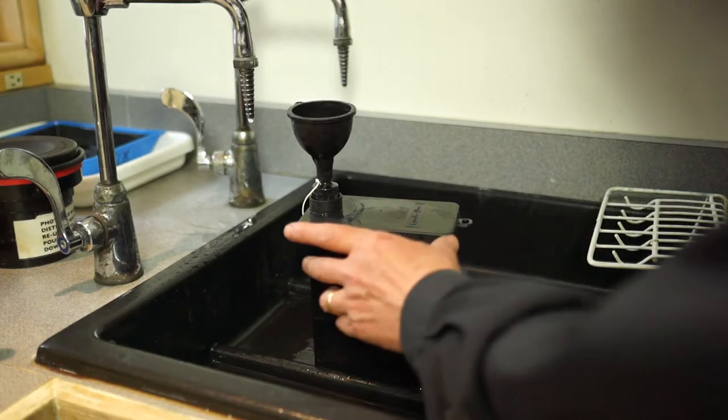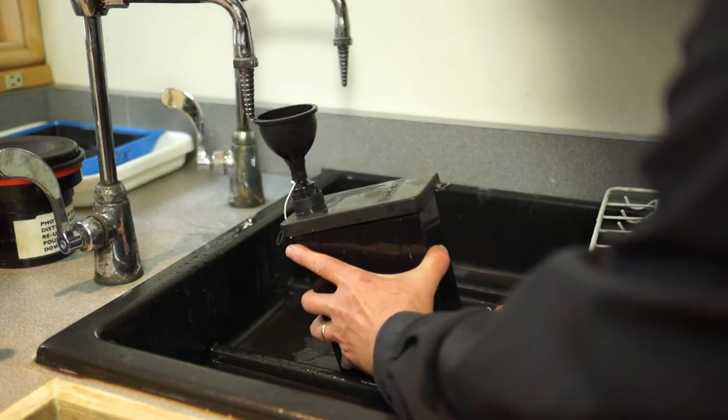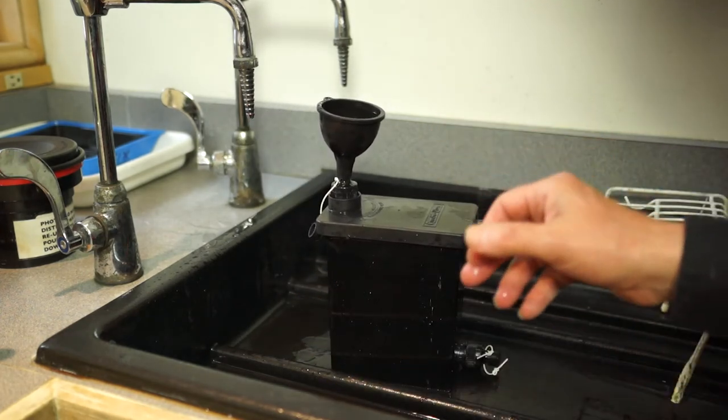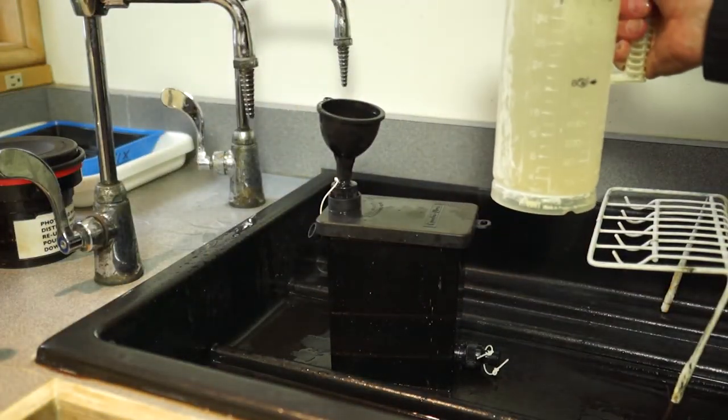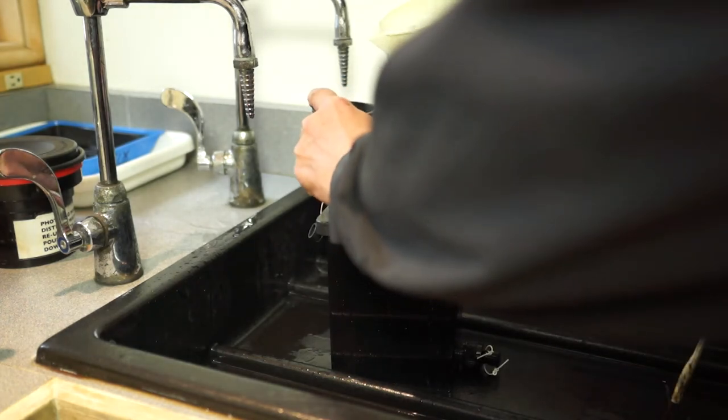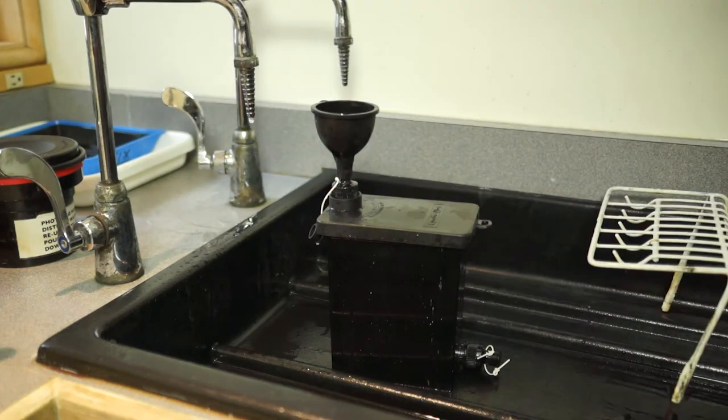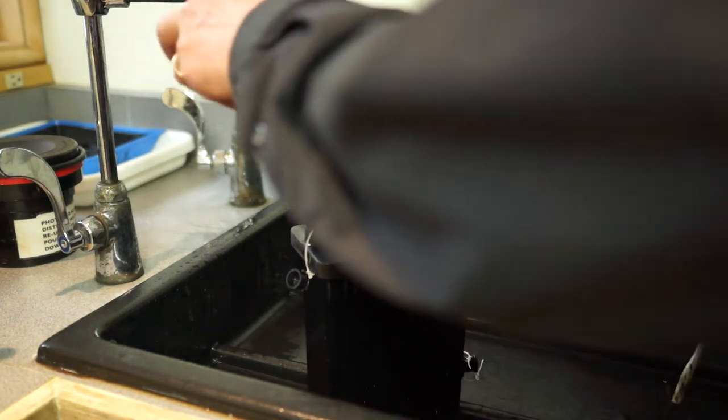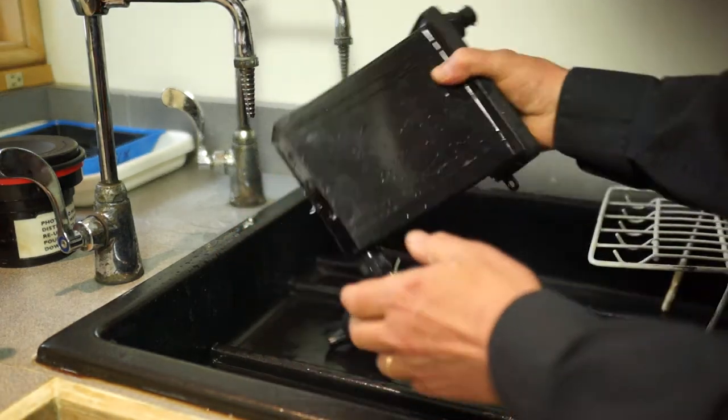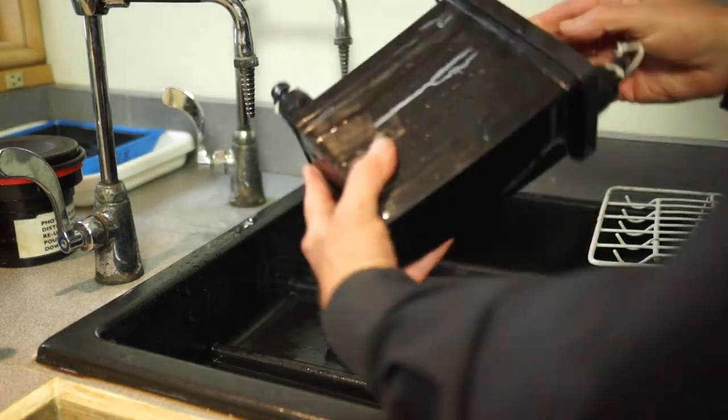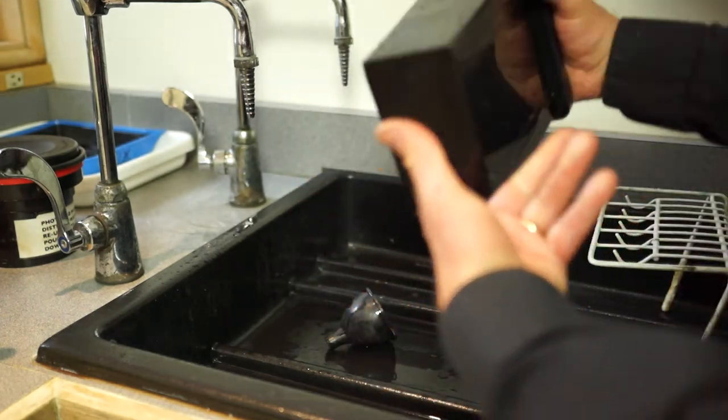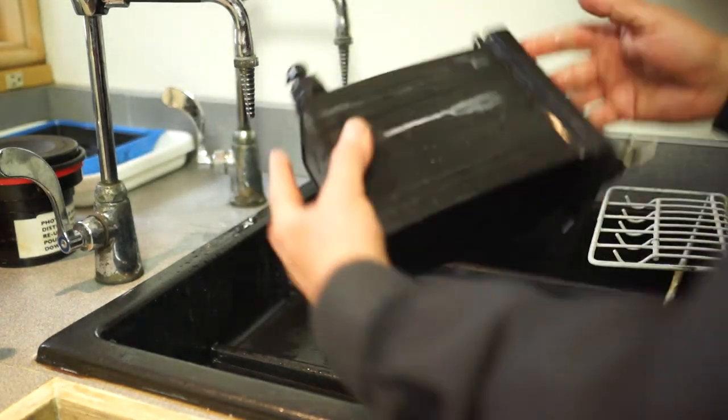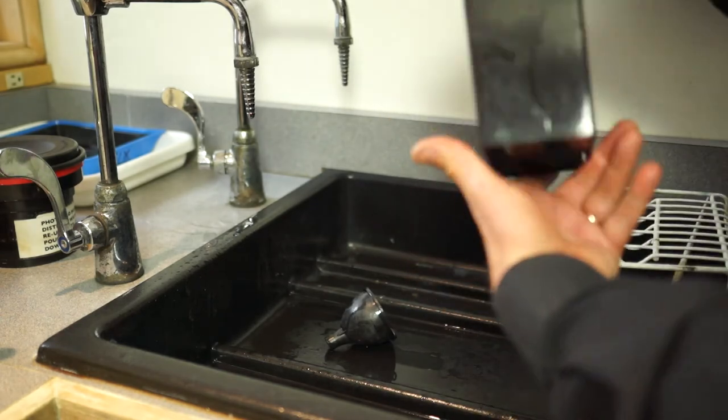Now we're ready for fixer. We'll just place this plug back in the bottom, leave the funnel on, measure out the 35 fluid ounces of fixer and pour that in. We're setting the timer at five minutes again. Take off the funnel, screw this in, put on the cap, and then do the same agitation sequence where we do the first 15 seconds and then tap the tank and let it sit down.